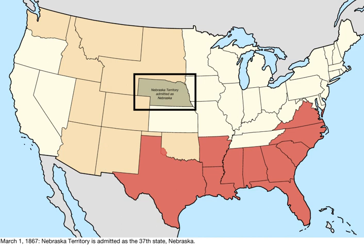This came to a head in 1860 and 1861, when the governments of the southern states proclaimed their secession from the country and formed the Confederate States of America. The American Civil War led to the defeat of the Confederacy in 1865 and the eventual readmission of the states to the United States Congress.